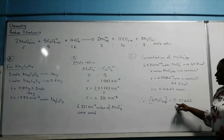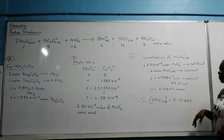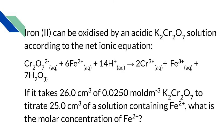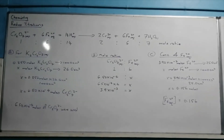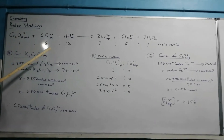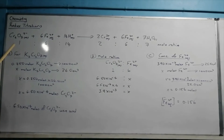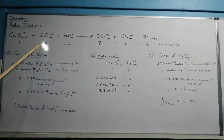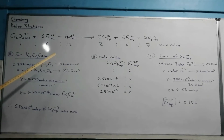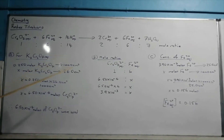Therefore, the molarity of the potassium permanganate solution is 0.01462 mol/dm³. Moving on to the next question: potassium dichromate is reacted with iron(II) solution in the presence of acid. From the balanced ion equation, 1 mole of dichromate ions reacts with 6 moles of Fe²⁺ ions and 14 moles of acid to produce 2 moles of chromium(III) ions, 6 moles of Fe³⁺ ions, and 7 moles of water.